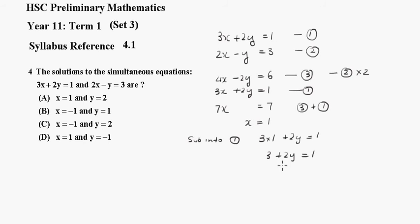Subtract 3 from both sides. We get 2y = -2. Dividing by 2, y = -1.